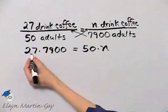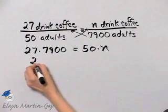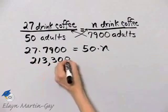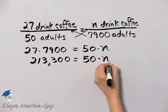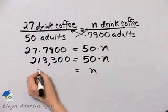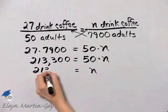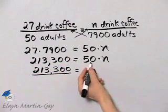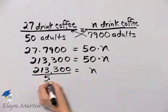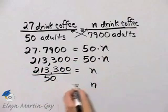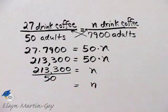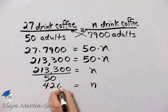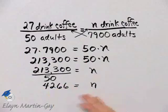Multiply 27 times 7,900 and you'll have 213,300 equals 50 times n. Then n is equal to 213,300 divided by 50. Divide 50 into 213,300 and you'll find that n is 4,266 — that's how many adults we expect to drink coffee in a town of 7,900 adults.